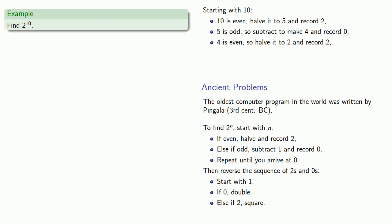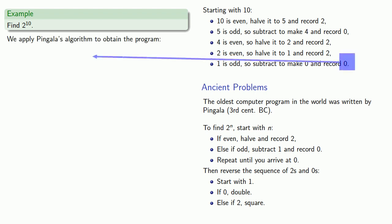4 is even, so we'll halve it to 2 and record 2. 2 is even, so we'll halve it to 1 and record 2. 1 is odd, so we'll subtract to make 0 and record 0. And now we have a sequence of 0s and 2s, and we'll record them in reverse order: 0, 2, 2, 2, 0, 2.